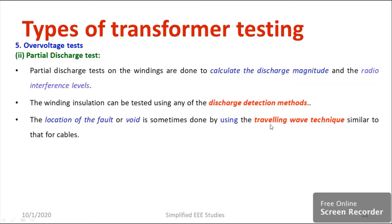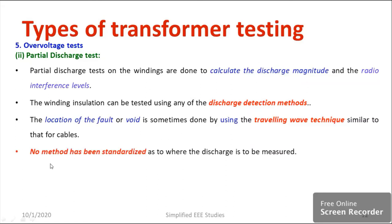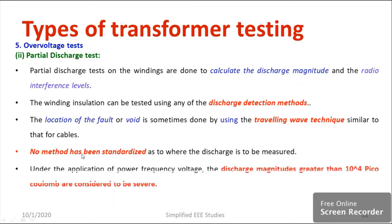You can refer to the previous video on cable insulation testing where traveling wave technique has been explained. The same can be applied for winding insulation. There is no standard method, so whichever method is convenient you can go for that. Under the application of power frequency voltage, discharge magnitude greater than 10^4 picocoulombs is considered as severe.